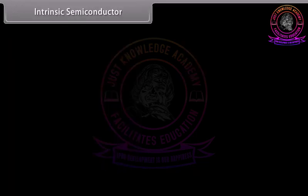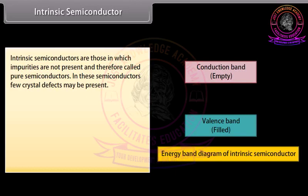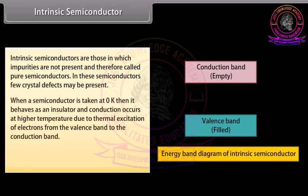Intrinsic semiconductors are those in which impurities are not present and are therefore called pure semiconductors. In these semiconductors, few crystal defects may be present. When a semiconductor is taken at zero Kelvin, it behaves as an insulator, and conduction occurs at higher temperatures due to thermal excitation of electrons from the valence band to the conduction band. For example, germanium and silicon. Silicon has four valence electrons.